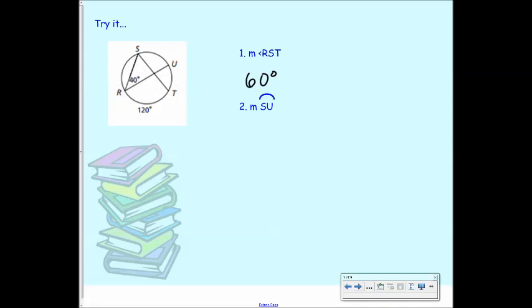The second one says the measure of the arc SU. So arc SU is right here. So then what angle do we have? What angle? SRU. And SRU is 40, which means arc SU is what? 80. Good. It's 80.